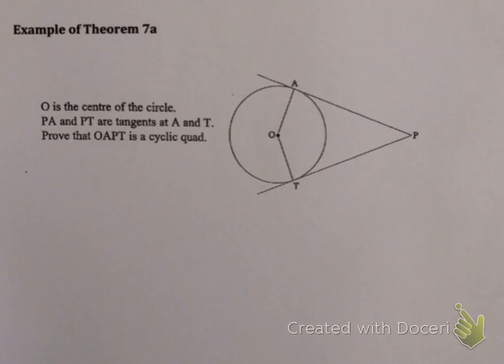So let's look at an example. It says O is the center of the circle. As soon as I see the word center, I start thinking theorem 1, 2, and 3, and I start thinking about radii. So immediately I know that OA and OT are equal. Now that may or may not be useful.